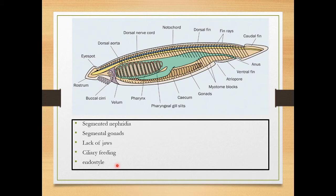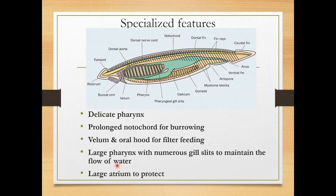Moving on to the specialized features assigned to Amphioxus: there is a delicate pharynx, and the notochord is prolonged — extended up to the head region — which helps in burrowing. This prolonged notochord is a specialized adaptation for burrowing into the substrate.